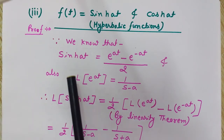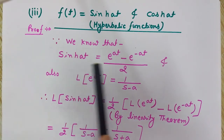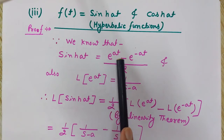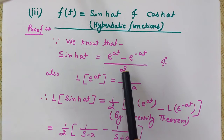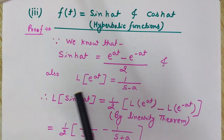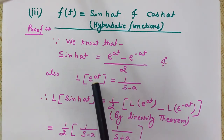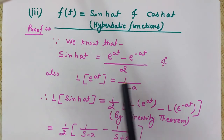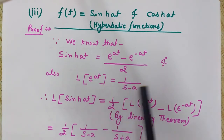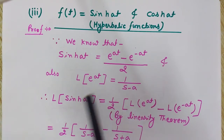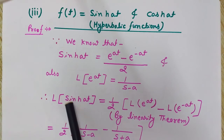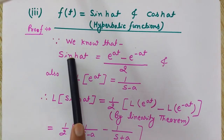We know that sinh(at) is equal to e^(at) minus e^(-at) divided by 2. We also know that the Laplace transform of e^(at) is 1 divided by (s minus a). We have seen and derived it earlier. We will use this result now.